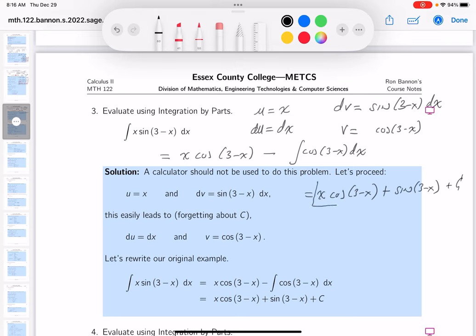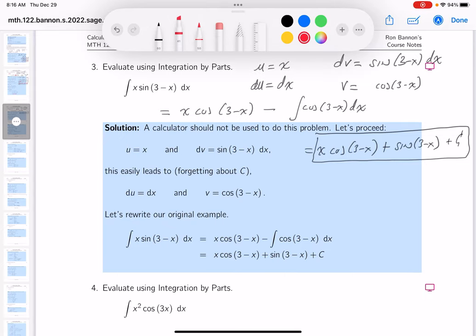I'm going to commit to this as an answer. Get my red pen out. See how we did. I'm going to look at their answer, which is over here: x cosine 3 minus x. I got that. Plus the sine 3 minus x plus c. And we're good. We're good to go. Thank you.